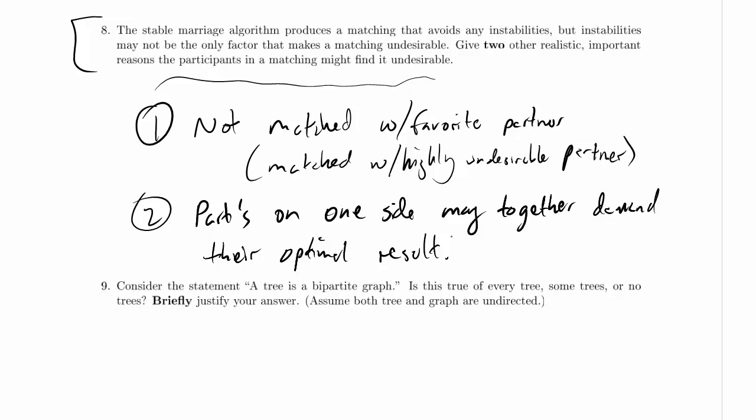So there's two perfectly reasonable reasons that participants might object, and there are many others. Stable marriage is not a perfect solution. It just avoids one particular kind of imperfection.